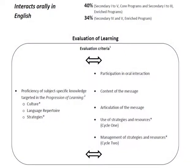Let's take a look at a page from the framework. Here you have competency 1. You'll notice at the top the weighting of the competency. On the right, the revised criteria. And on the left, a new criterion: proficiency of subject-specific knowledge, which is basically the knowledge, or le connaissance.